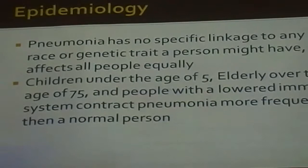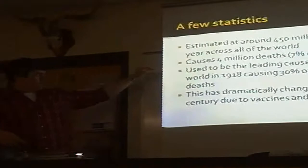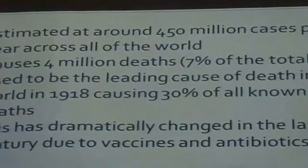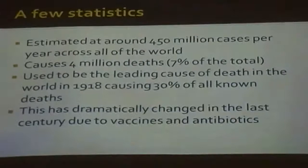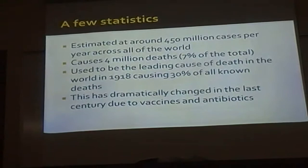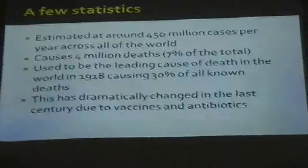Just a few statistics. Pneumonia is contracted around 150 million times and causes 4 million deaths annually. It used to be the leading cause of death in the world, causing around 30% of all known deaths around 1918. It still is one of the most well-known diseases that can cause death. Most of the time when pneumonia causes death it is from the person having a lower immune system, but there are cases where it is the direct cause of death and even a healthy person can die. Most deaths occur in people with AIDS or HIV, or in regions like Africa where proper treatment is unavailable.